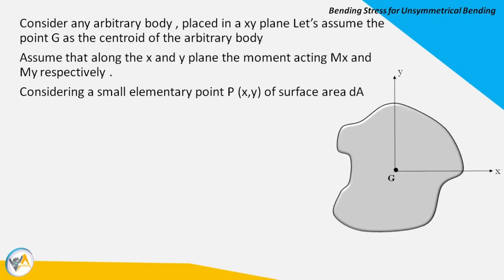Now consider any arbitrary body placed in the XY plane. Assume point G is the centroid of the arbitrary body. Along the XY plane, the moments acting are Mx and My respectively. To find bending stress for an unsymmetrical section, it depends on the cross-sectional shape, size, and the moment acting on the section, varying in terms of Ixx, Iyy, and Ixy. Consider a small element at point P(x, y) with surface area dA as shown in the figure.